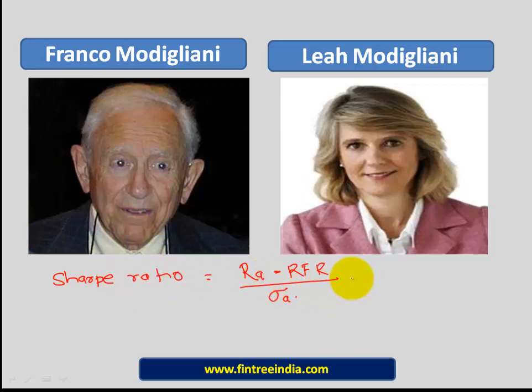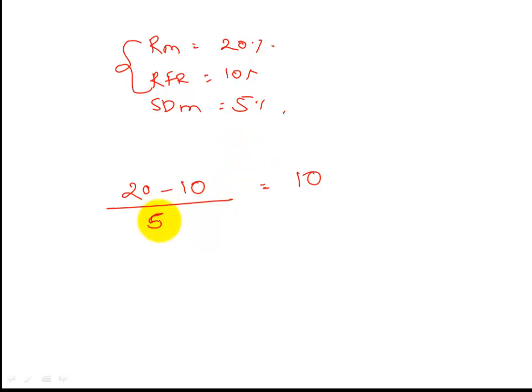Let's do a quick example to understand the Sharpe ratio. Let us say that return on a particular market portfolio is 20%, risk-free rate of return is 10%, and standard deviation of the market is 5%. The whole intuition here is how much extra markets have earned over and above RFR. So if you say 20 minus 10, the extra returns earned by the market is 10. But to earn that extra return of 10, how much extra risk have they taken? They have taken risk of 5.